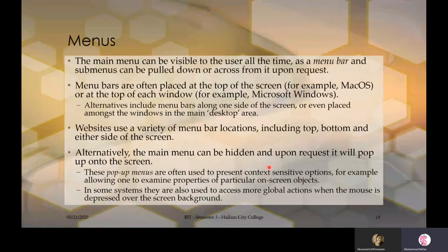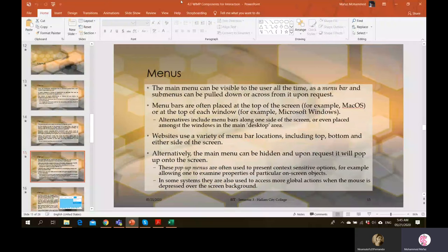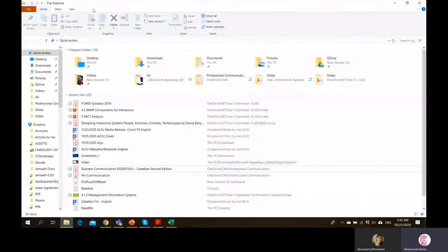The main menu can be visible to the user all the time as a menu bar, and sub-menus can be pulled down or across from it upon request. Menu bars are often placed at the top of the screen — for example in Mac OS — or at the top of each window in Microsoft Windows. Nowadays in office applications we don't see menus; we have the concept of a ribbon interface instead.